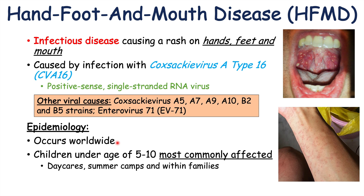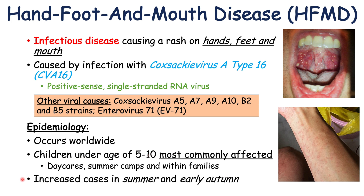There's going to be a lot of what we call horizontal transmission — transmission between children. But in more rare cases, children can pass this condition on to their parents as well. We can see increased cases of hand, foot, and mouth disease at particular times of year, especially in the late summer and early fall, with a peak in case numbers during these periods.